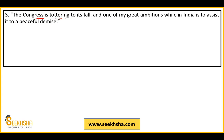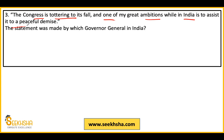The next statement is: 'The Congress is tottering to its fall, and one of my greatest ambitions while in India is to assist its peaceful demise.' So the statement says Congress is failing, and the speaker's dream while in Hindustan is to end the Congress. Which Governor General gave this statement? These are very important statements to remember.